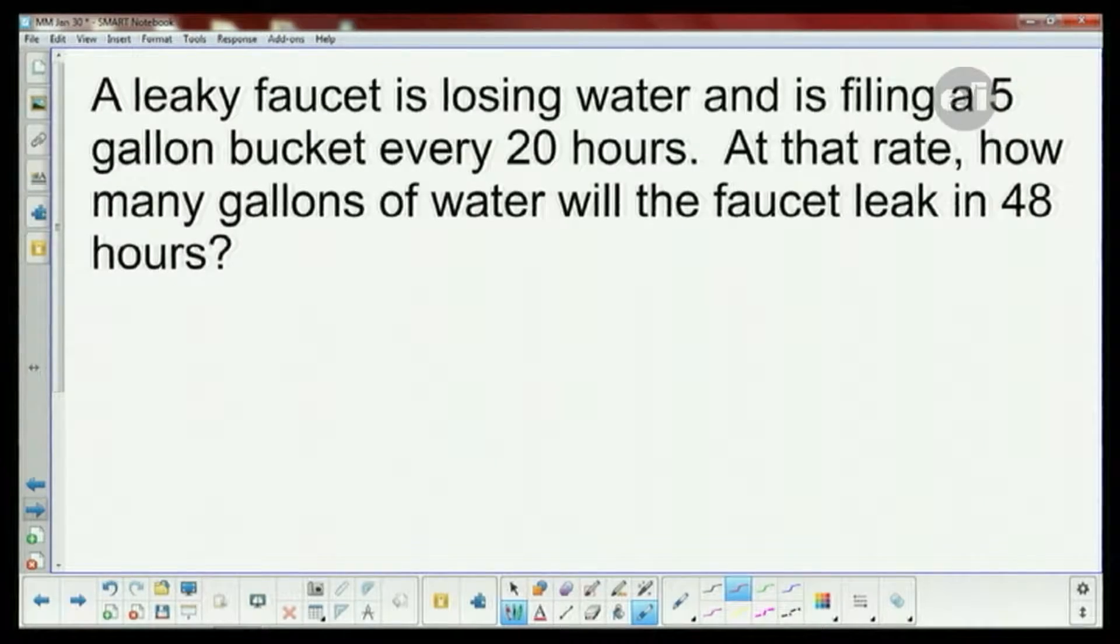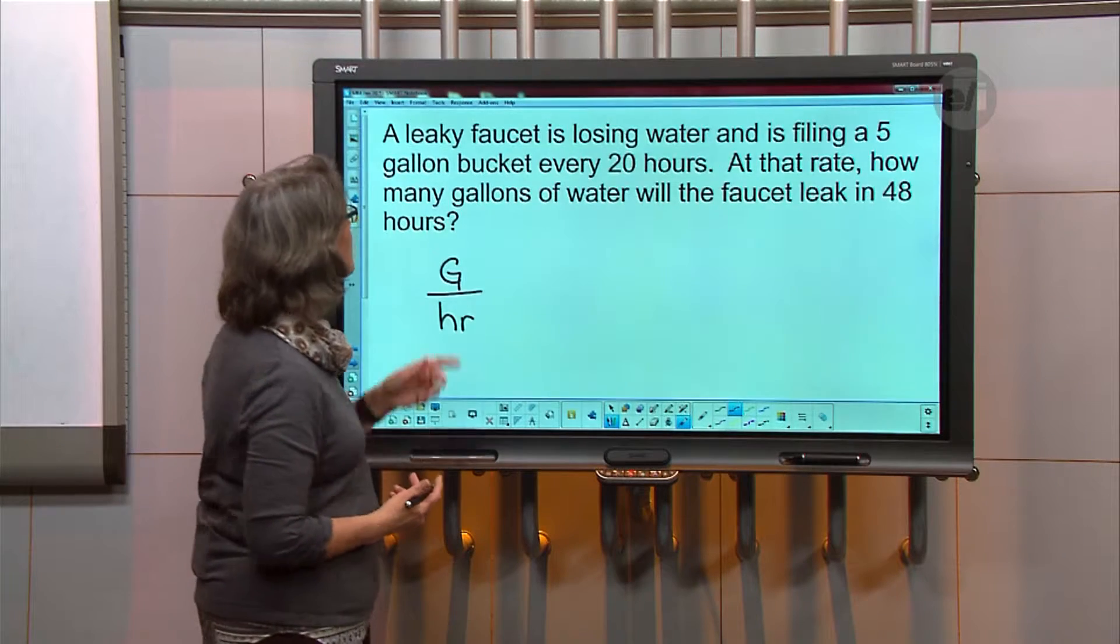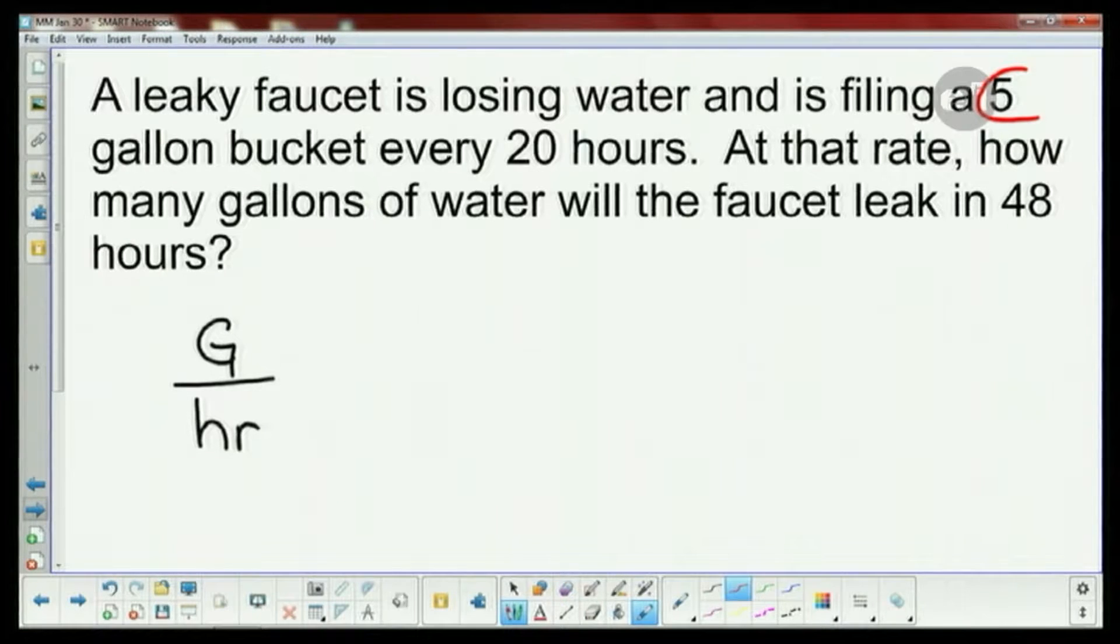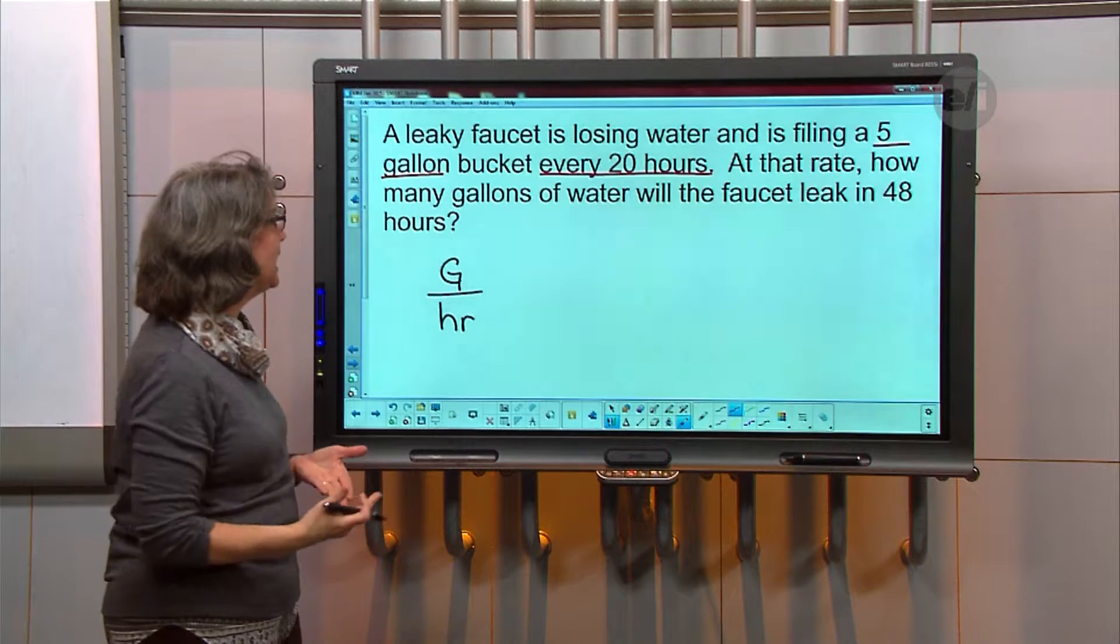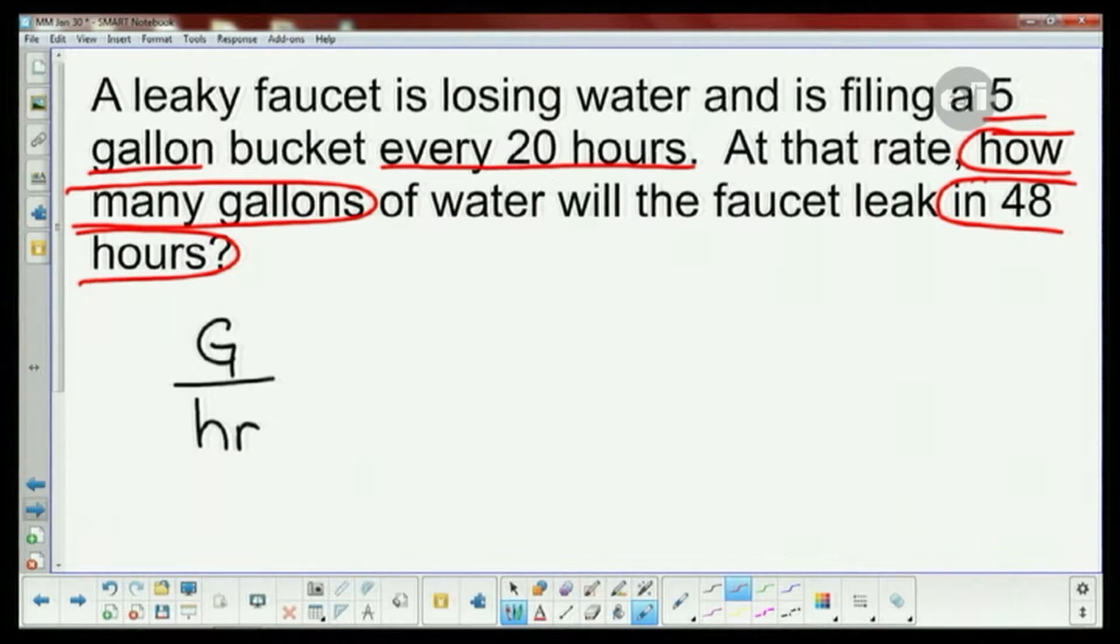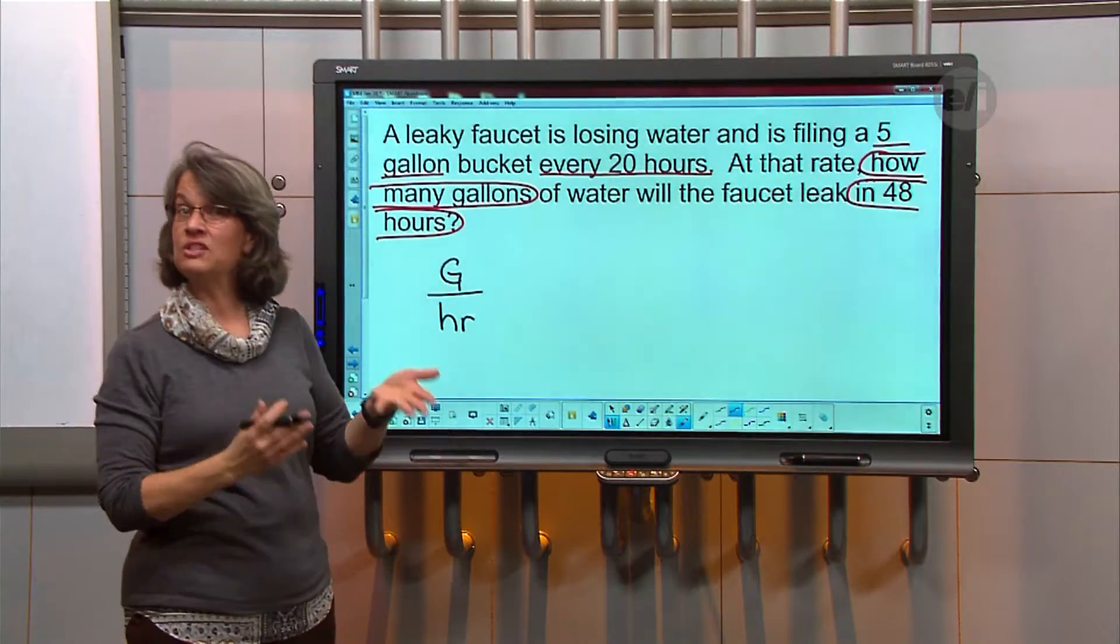So again make your base ratio. We want gallons, I'm just going to put a G, and then we're going to put it over hours. So now let's figure out what do we know, what do we need to find. It says leaky faucet losing water, filling 5 gallons, so here's my 5 gallons. Let me underline that. Let's keep the same idea. We'll underline what we know: 5 gallon every 20 hours. Now circle what you've got to find: how many gallons in 48 hours.